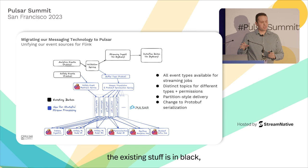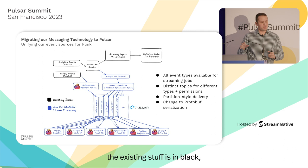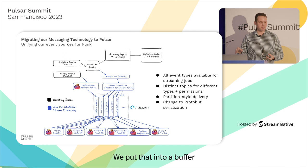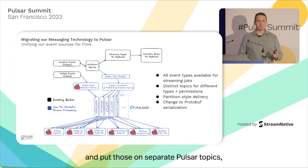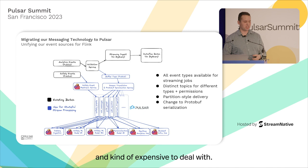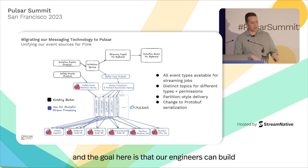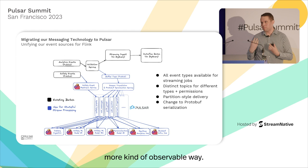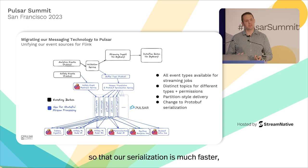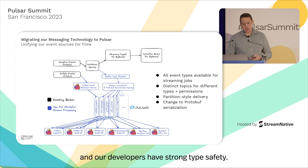This is the infrastructure we're building — the new stuff is in blue, the existing stuff in black. We take a tap off of our validation service, which has analytics events, put that into a buffer, do some schema translation and encoding, and put those on separate Pulsar topics — much more organized than having all events on a single topic. We take safety events and re-stream those into Pulsar topics as well. Our engineers can select any event they want. We're also switching to protobufs so that serialization is faster, more efficient, and developers have strong type safety.